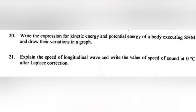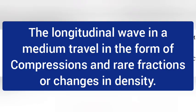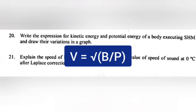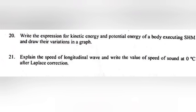Question 21: Explain the speed of the longitudinal wave and write the value of the speed of sound at 0 degrees Celsius after Laplace correction. Answer: The longitudinal wave in a medium travels in the form of compressions and rarefactions or changes in density. V is equal to root of P by rho. Laplace correction: V is equal to root of gamma P by rho.